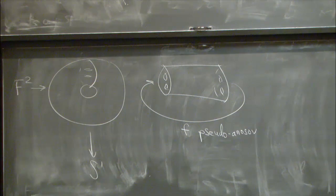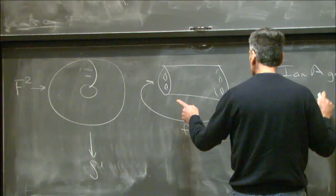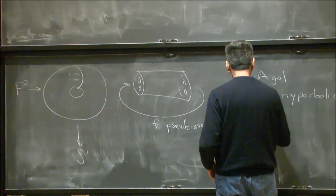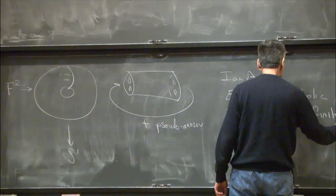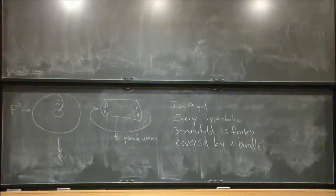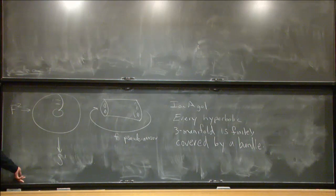It wasn't clear at the time how special or general these are. It turned out later, due to a recent theorem of Ian Agol, that every hyperbolic manifold is finitely covered by one of these. Every closed hyperbolic three-manifold has a finite cover of this type. So this is a reasonably general class, and we certainly need to understand the geometry of these things.